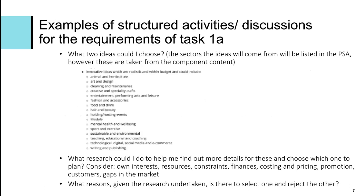The specification content lists the suitable ideas that will be on the PSA that learners are able to choose from. What they need to consider is any research that could help them find out more details and choose which idea to plan. They need to consider own interests, resources, constraints, finances, costing and pricing, promotion, customers and gaps in the market — these are listed in the specification content as the areas they've got to consider ready for Task 1A. They also need to consider what reasons, given the research undertaken, there are to select one idea and reject the other.